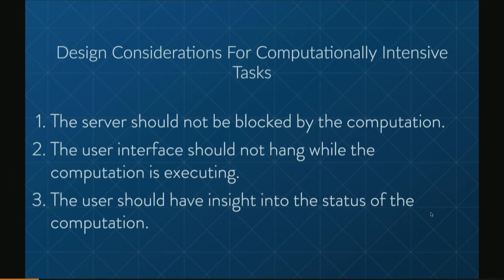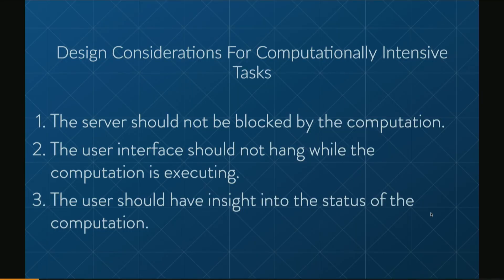The first and arguably most important thing is: don't block everything. If one user is doing something computationally complex, it shouldn't block the entire server from being able to do any computation — so another user's interface all of a sudden locks up and they have no idea why. Second, if you've got multiple things going on in your application and one is a computationally complex task, all other interface elements and outputs should not be blocked while the code is executing. That leads to a poor user experience.